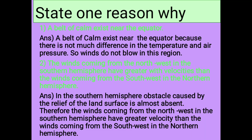State one reason why: A belt of calm exists near the equator. Answer: A belt of calm exists near the equator because there is not much difference in the temperature and air pressure. So, winds do not blow in this region.